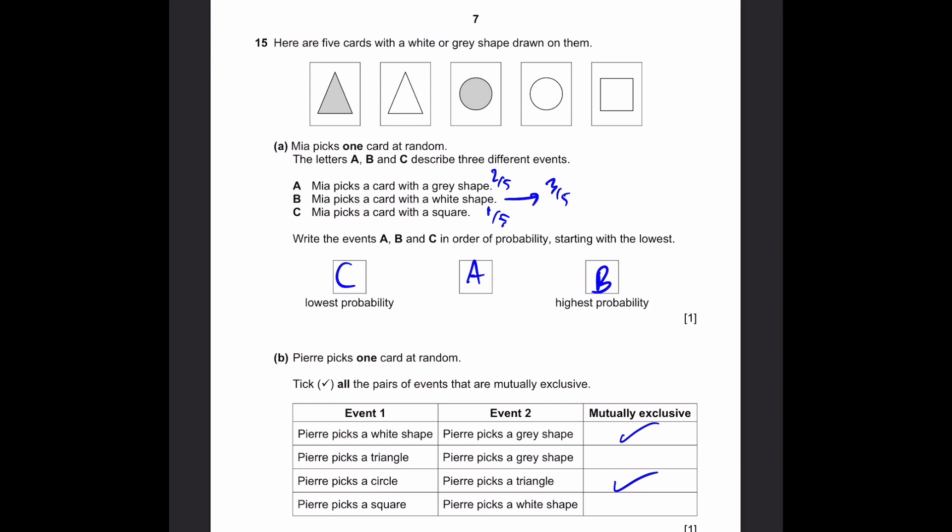Now, Pierre picks a square and Pierre picks a white shape. Well, in this case, the card with the square is a white shape. Therefore, these two can happen at the same time. So, they're not mutually exclusive. That's the answer.